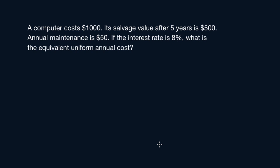What are the knowns and the unknown? Computer cost is $1,000, so that's your present value of the computer itself. So P equals $1,000. That's one known.